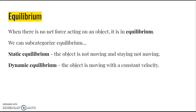Equilibrium — you may be familiar with this word from chemistry. Here we use a similar definition with respect to forces: when there's no net force acting on an object, it is in equilibrium. We can subcategorize equilibrium as static equilibrium, when the object is not moving and stays not moving, and dynamic equilibrium, when the object is moving at a constant speed. Equilibrium occurs when net force is zero, which implies no acceleration, since acceleration equals force over mass.